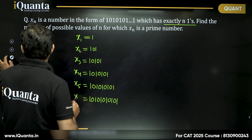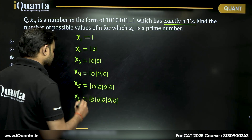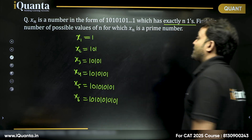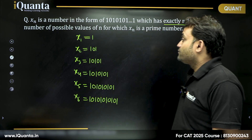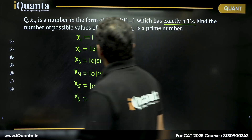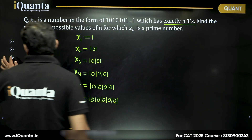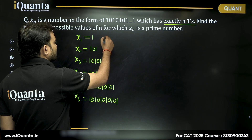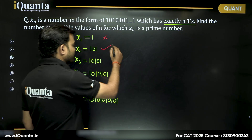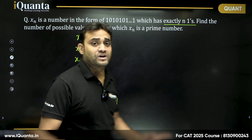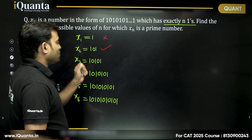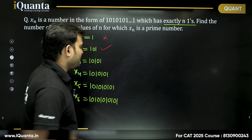We need to find for how many values of n this will be a prime number. The first one, when it is only 1, it is not a prime number. 101 — we can figure out 101 is a prime number easily. What is 10101? This number is a multiple of 3.